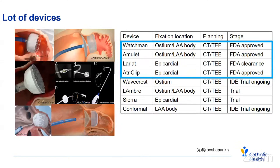Now let's move on to the devices. There are currently many devices available. The Watchman, Amulet, Lariat, and AtriClip are FDA approved. We have a few in the trial phase: Wave Press, Lambre, Sierra, and Conformal. The market is going to be booming with even more devices, which makes this an even more important topic.